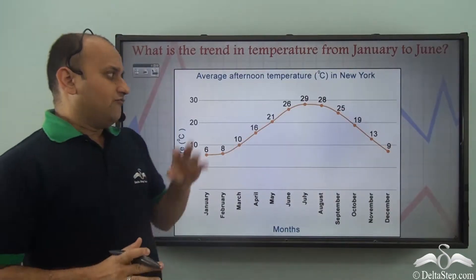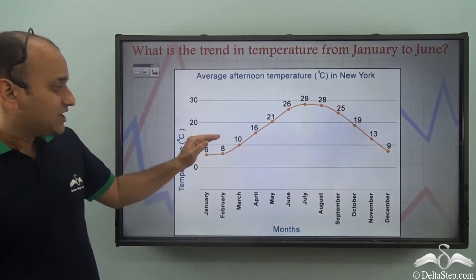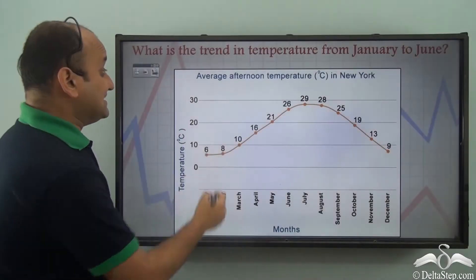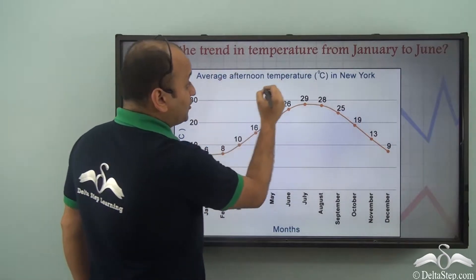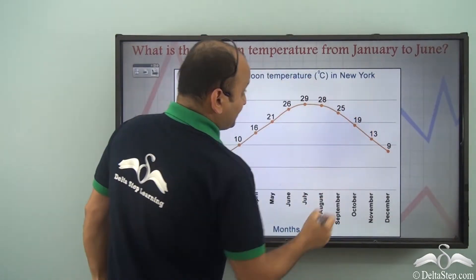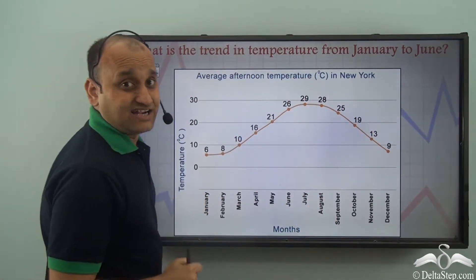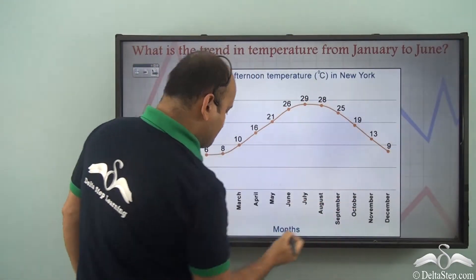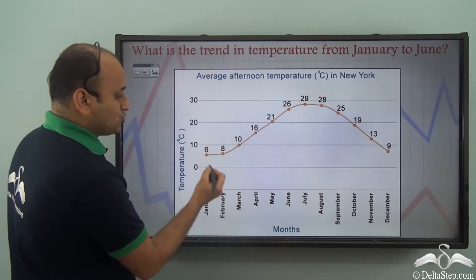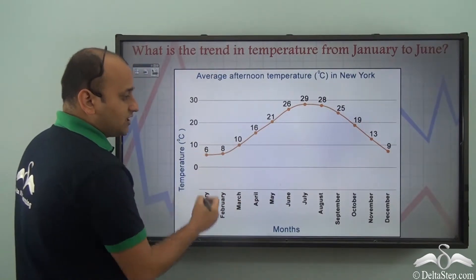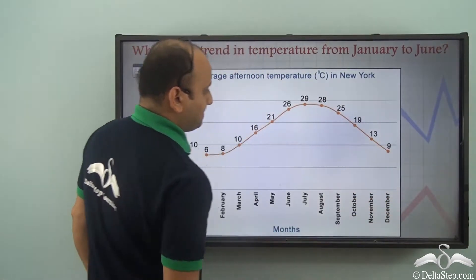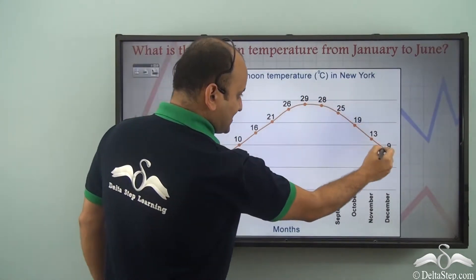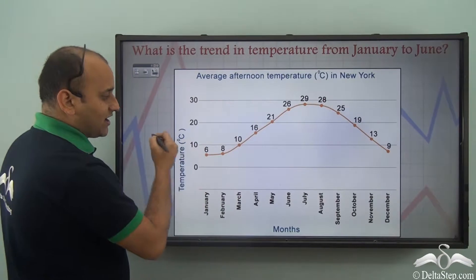Now we have a temperature graph of New York. This shows the average afternoon temperature in New York, with values in degrees centigrade. These are the different values according to months, showing data from January till December. As you can see, it shows a trend because this is a line graph.